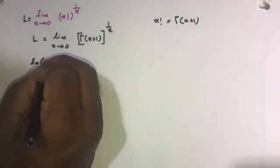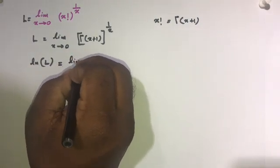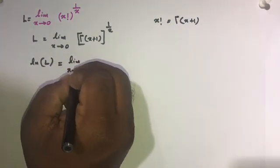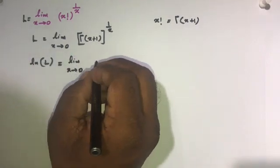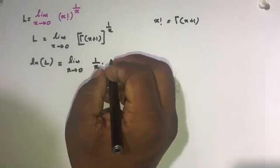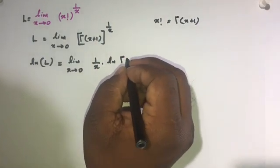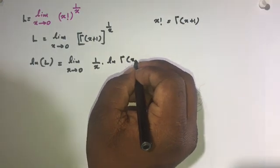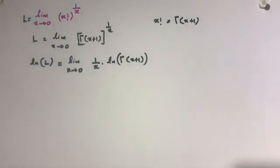Now I am going to take the natural log of both sides. So we can write: natural log of L is equal to the limit as x approaches 0 of 1 over x times natural log of gamma of x plus 1.